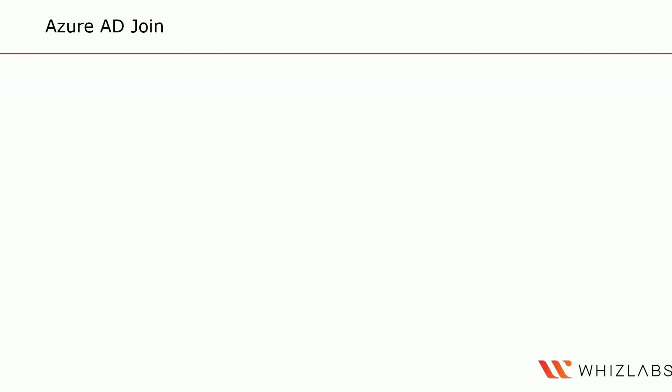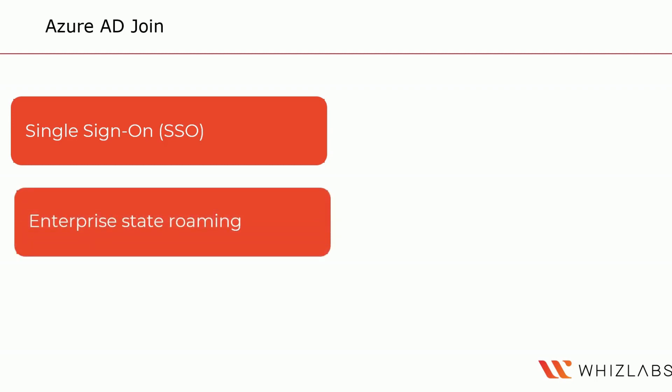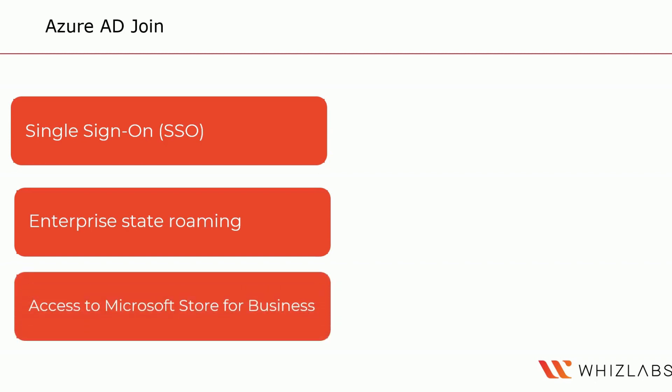The Azure AD Join feature works with single sign-on to provide access to organizational apps and resources, and it will simplify Windows deployments for work-owned devices. Single sign-on allows joined devices to have single sign-on access to your Azure-managed SaaS apps and services, meaning users no longer need extra authentication prompts when working across different resources. Enterprise State Roaming, introduced in Windows 10, allows users to synchronize their settings and app settings data to joined devices, reducing the time to configure a new device. You also have access to the Microsoft Store for Business, where users can choose from an inventory of applications preselected by your organization.